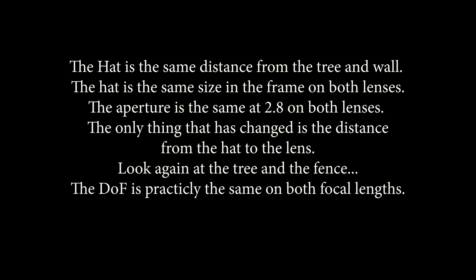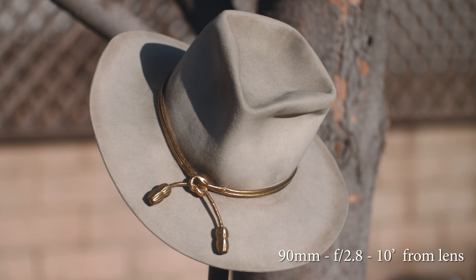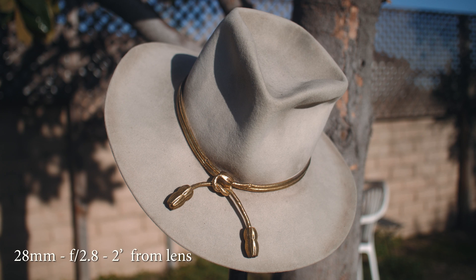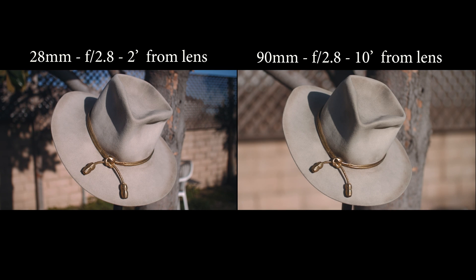Now look at the tree and the fence — the depth of field is practically the same. On a side-by-side comparison, yes, it does seem that the hat on the right, the 90 millimeter, does have more shallow depth of field. And if you look at the hat on the left, yes, we have shallow depth of field, which some people say you can't get with a wide-angle lens.